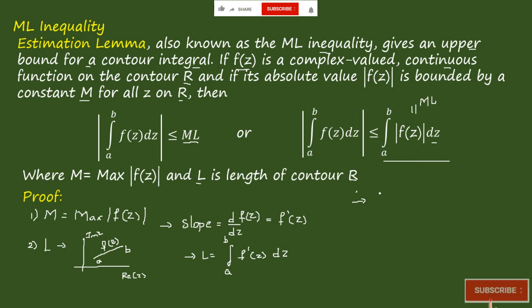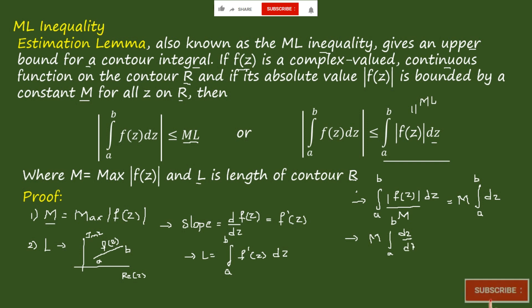For the integral from a to b of |f(z)| dz: since the maximum value of |f(z)| is M, we can take M outside the integral, giving M times the integral from a to b of |dz|. Writing dz as (dz/dt)dt and integrating from a to b gives the length L. So this term becomes M·L.